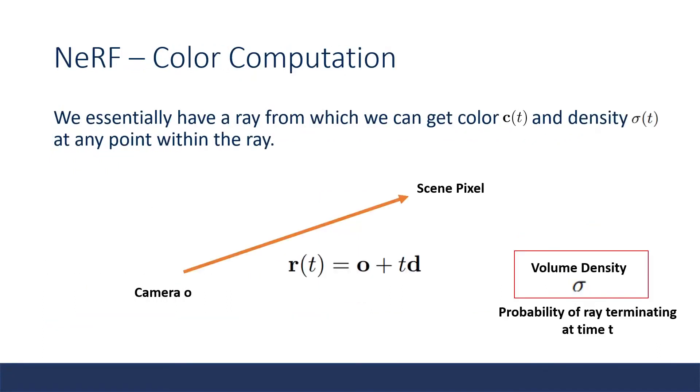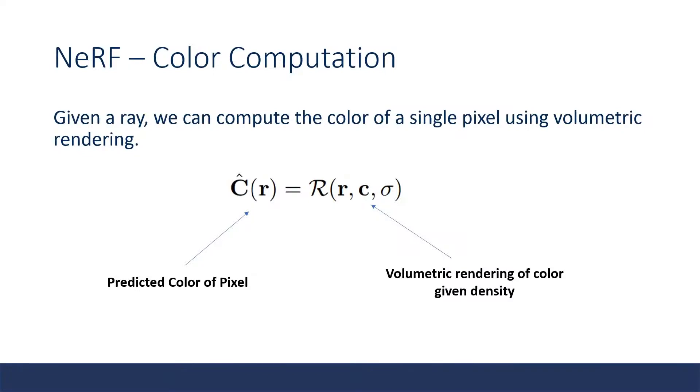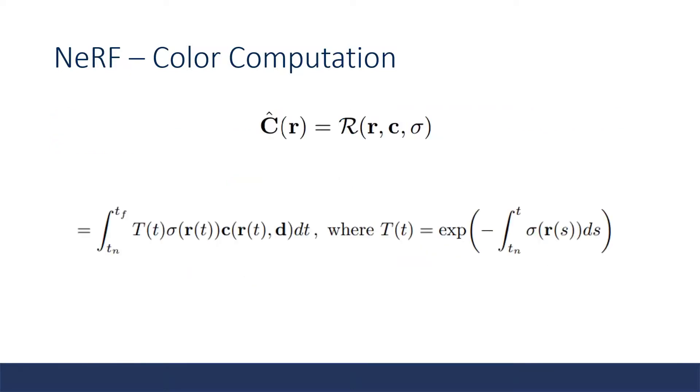Given these outputs, what we can do is get a ray from our camera position o to our scene pixel. We can calculate the color and density along this entire ray, and using this color and density, we are able to estimate the expected color of a scene pixel. The predicted color of our pixel is calculated using volumetric rendering.